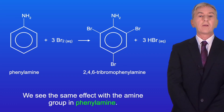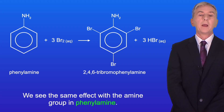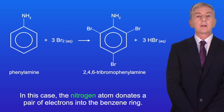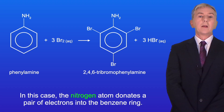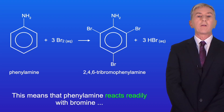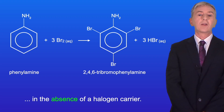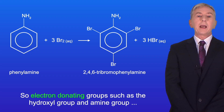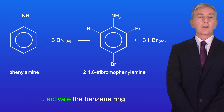We see the same effect with the amine group in phenylamine. The nitrogen atom donates a pair of electrons into the benzene ring, so the amine group activates the molecule. This means that phenylamine reacts readily with bromine in the absence of a halogen carrier. So electron donating groups, such as the hydroxyl group and amine group, activate the benzene ring.